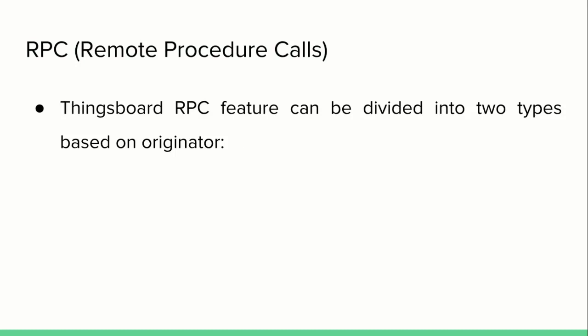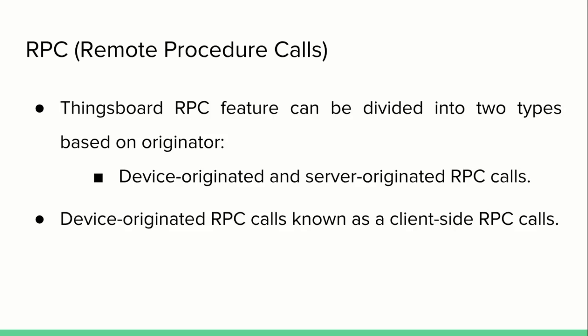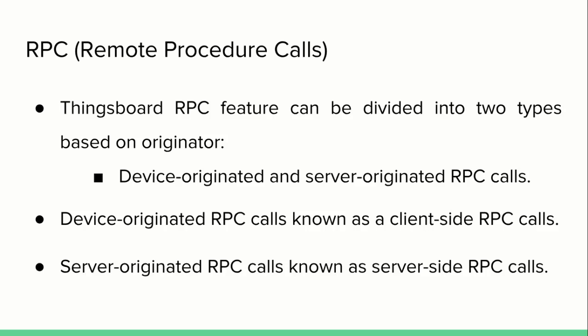ThingsBoard RPC features can be divided into two types based on the originator: device-originated and server-originated RPC calls. Device-originated RPC calls are known as client-side RPC calls, and server-originated RPC calls are known as server-side RPC calls.